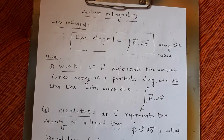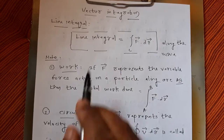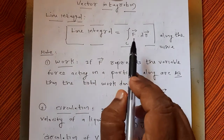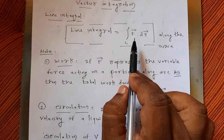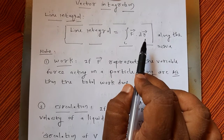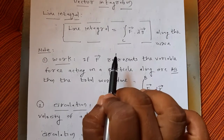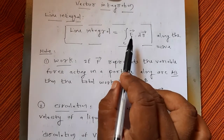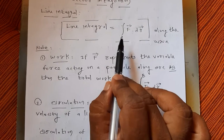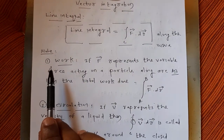First we will discuss the line integral, which is given by the formula: integration of vector F dot dL. Here r indicates the position vector, given by r = xi + yj, along a closed curve C.